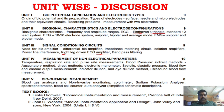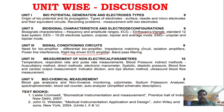Unit 5 is a very simple unit — almost 8 marks per question. Topics include different types of analyzers, blood cell counter, and related questions requiring diagrams and explanations. There are about 3-4 questions and you can easily go through all of them in Unit 5. So this concludes the unit-wise discussion.